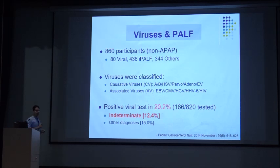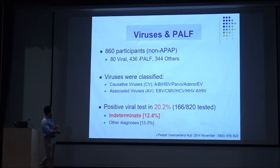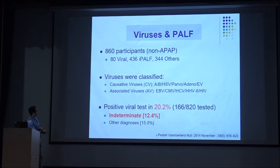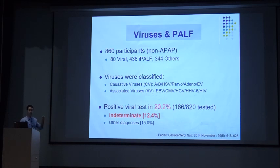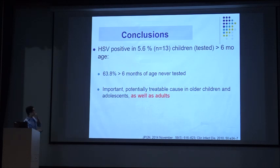Looking at viruses, the PALF study group tested almost 860 participants retrospectively using samples from their biorepository. They divided viruses into causative and associated categories, assuming hepatitis A, B, HSV, parvovirus, adenovirus, and enterovirus as causative. Out of 820 samples tested, almost 20 percent came out positive in retrospect, including 12.4 percent of indeterminate cases. This means almost one sixth of indeterminate ALFs could be assigned a diagnosis — and importantly, HSV came out positive even in adolescents beyond infancy, with almost 70 percent of patients never having been tested for HSV.